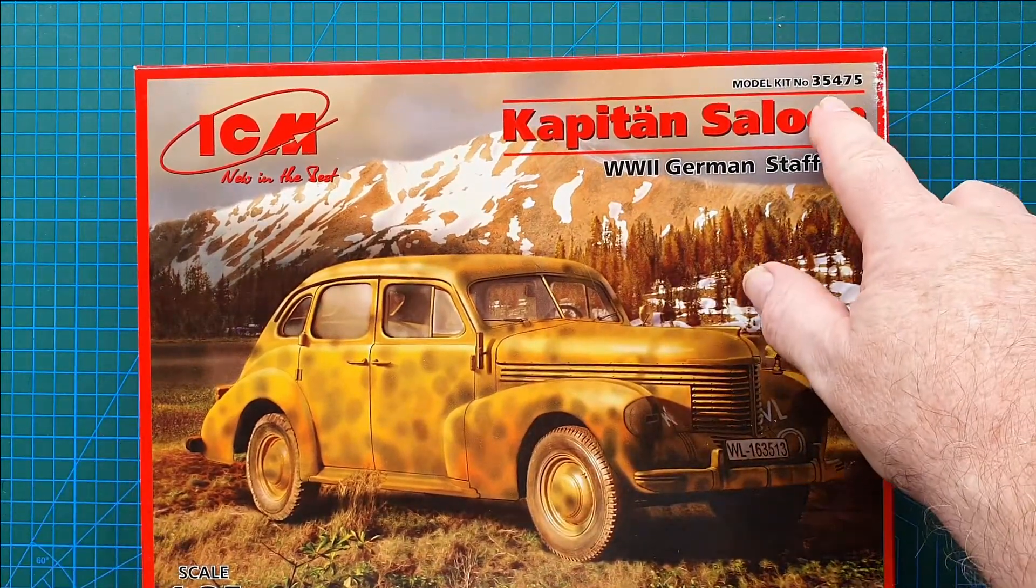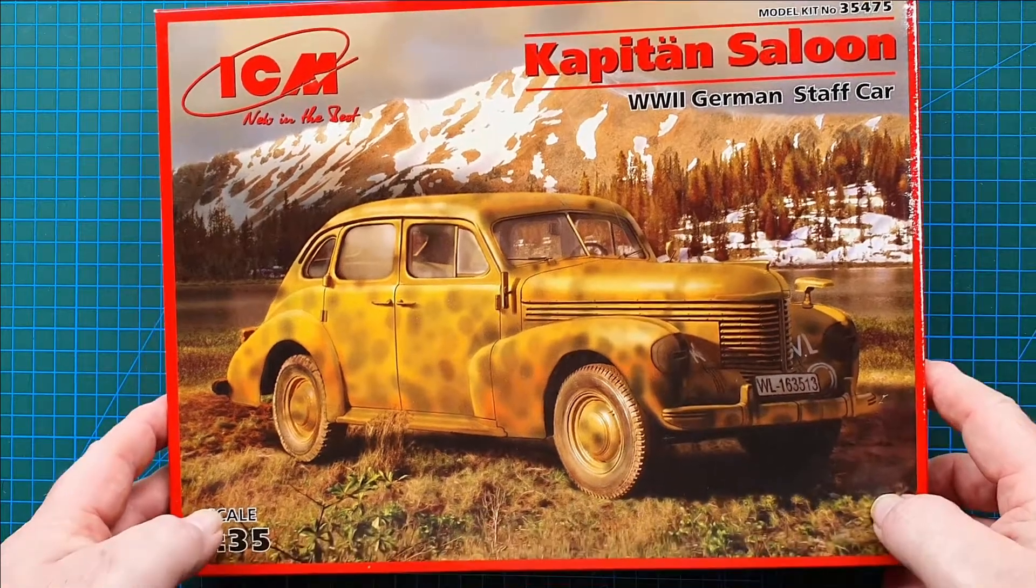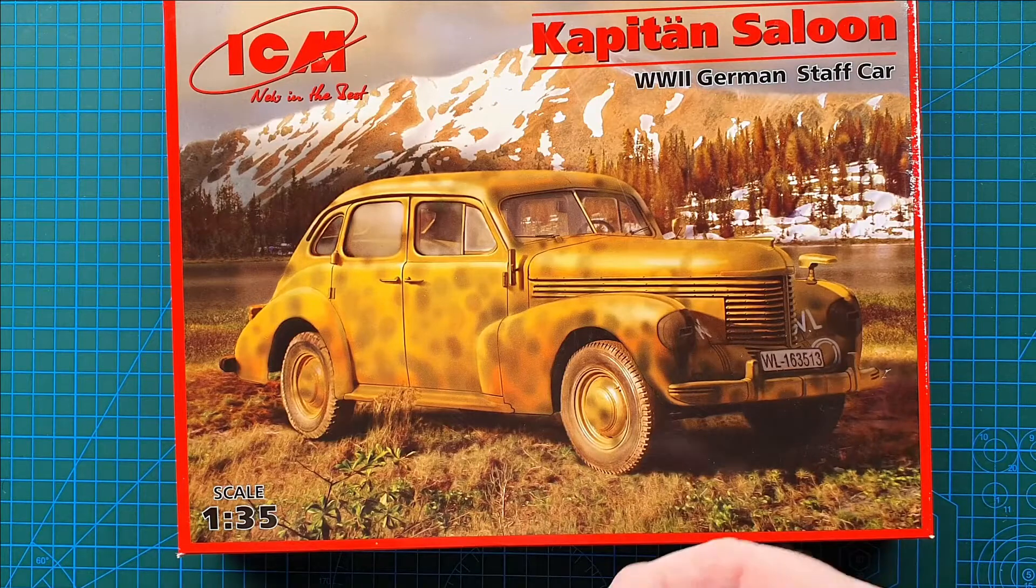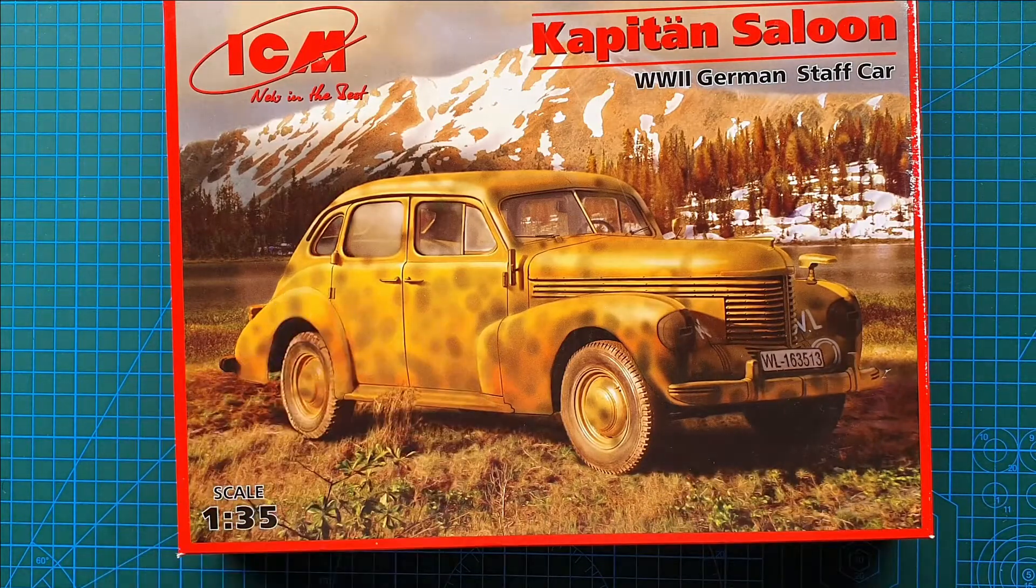The kit number is 35475. This is an Opel Capitan car, four-door saloon, produced in the late 1930s.